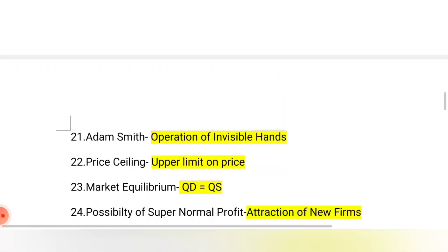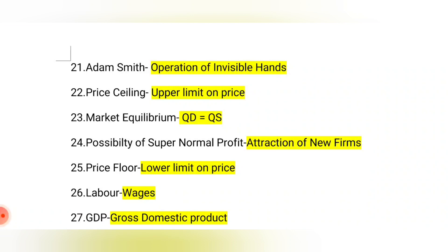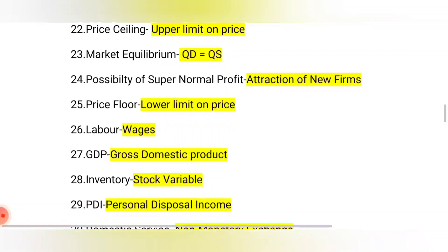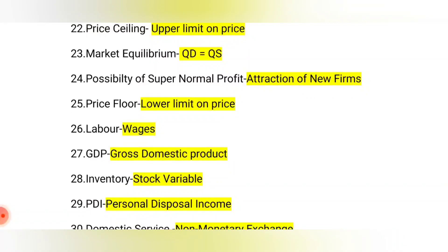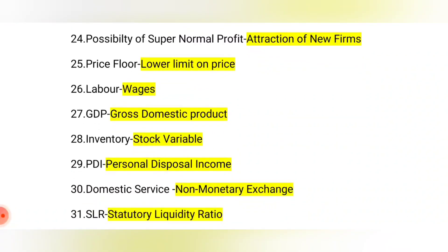Adam Smith gave the theory that everything is done with the help of the invisible hand. Price ceiling means setting an upper limit above the equilibrium price. Possibility of supernormal profit will attract more new firms — the more the supernormal profit, the more the competition and the more others want to join. Price floor means setting a lower limit — a minimum price, such as a labor wage.